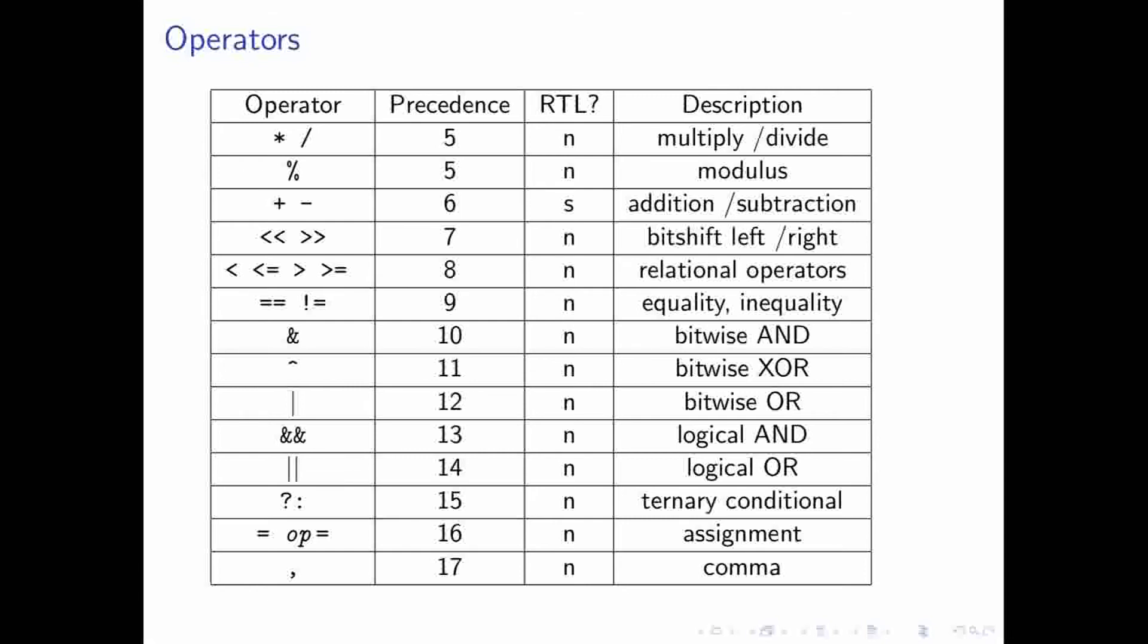One thing that does bear worthiness of being mentioned is that equality and assignment are two different things in C++. So, when you assign something, you're basically saying, this is the value. And when you're checking for equality, you're saying, are these the same?